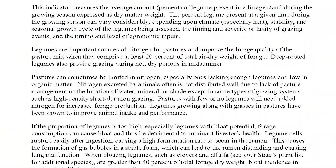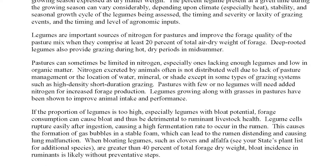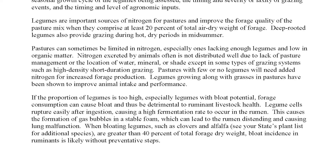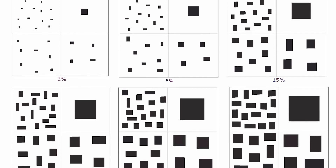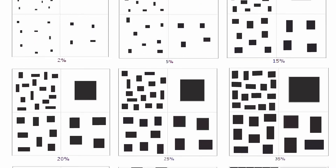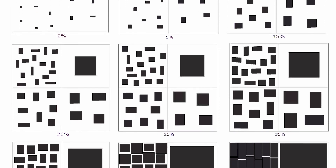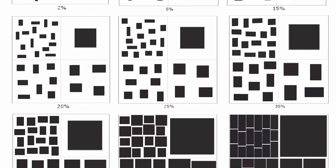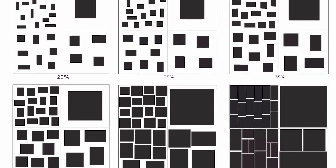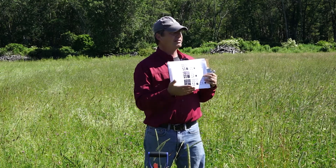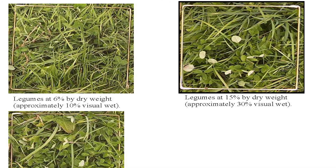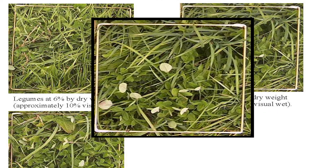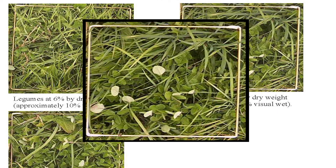Percent legumes is a bit of a tricky one. There is a sheet that shows some percentages, and these are available online. Percent legumes is tricky because in this document — the pasture condition score — and in a lot of forage systems, they're always talking about dry matter. Dry matter is the amount of forage available without water; it's gone into an oven, lost all of its water, and it's just the dry portion of the grass. By comparison, an image in there looks like it's covering about 30%, but when you actually dry it down it comes down to about half that in terms of dry matter.